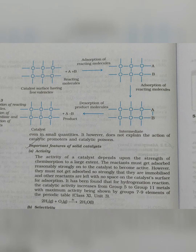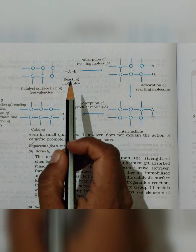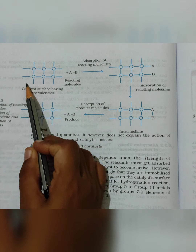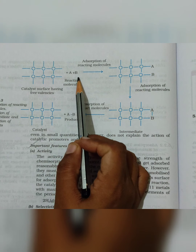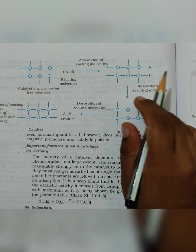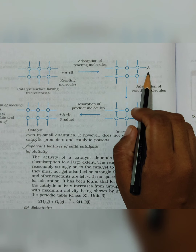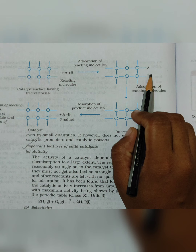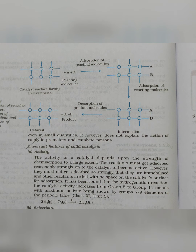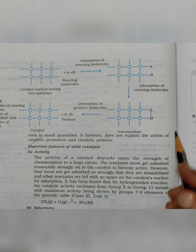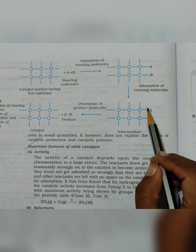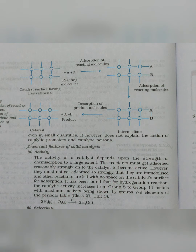Let us try to understand the mechanism better. Initially we have the catalyst surface and the reacting molecules. The reacting molecules get diffused — they break down and come as individual molecules and sit on the surface of the catalyst. Then adsorption occurs, and after adsorption they give you an intermediate product — you can see they have formed a product by joining with each other. After they form an intermediate product, desorption will occur again, meaning they will be removed from the surface of the catalyst to give individual products.